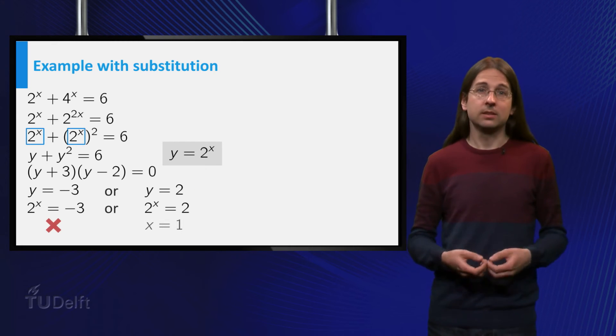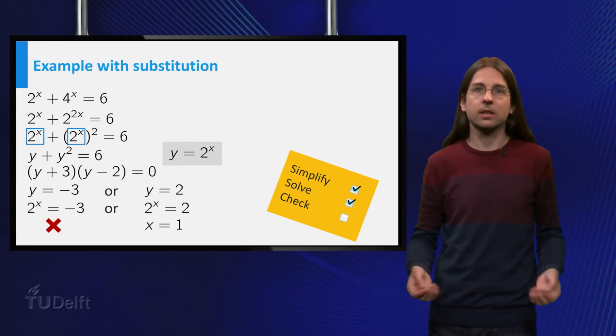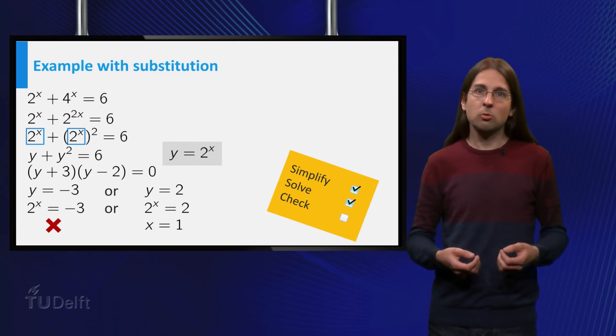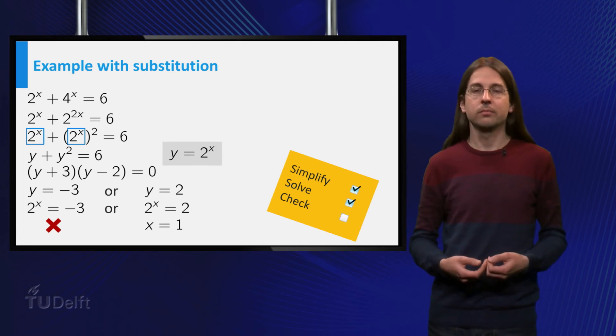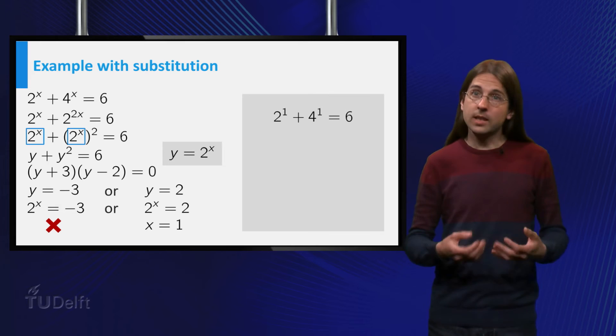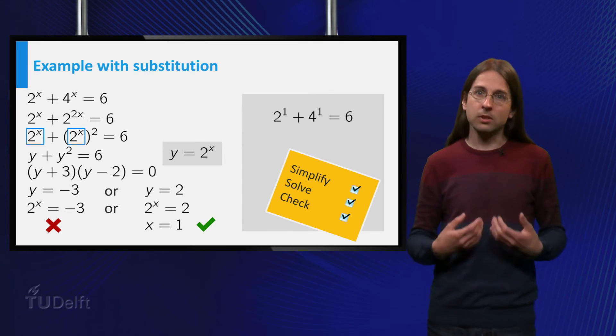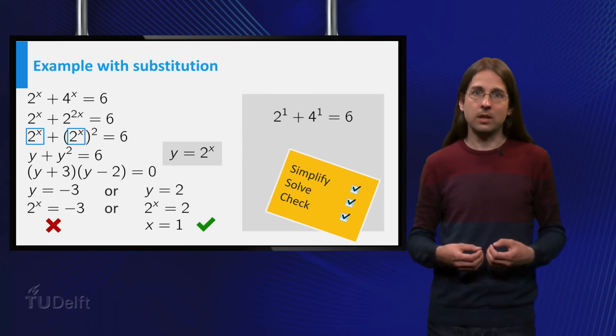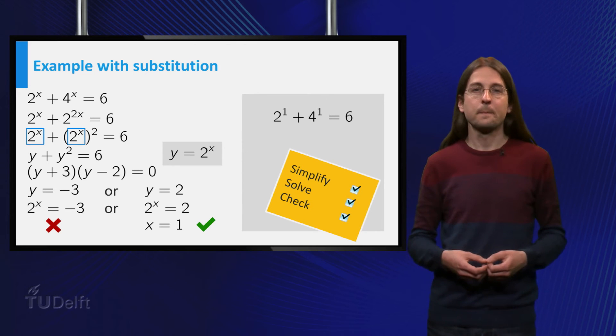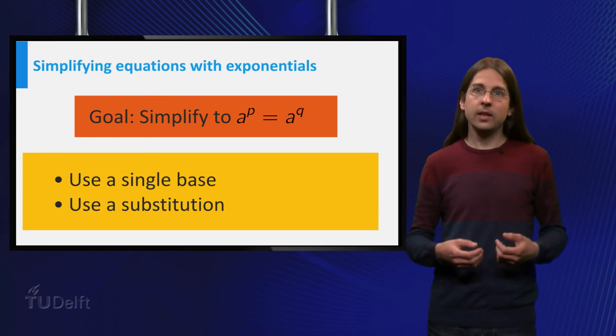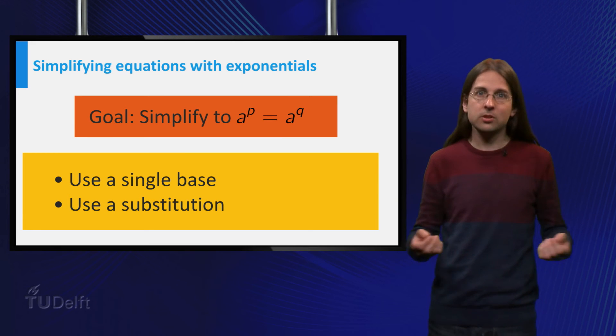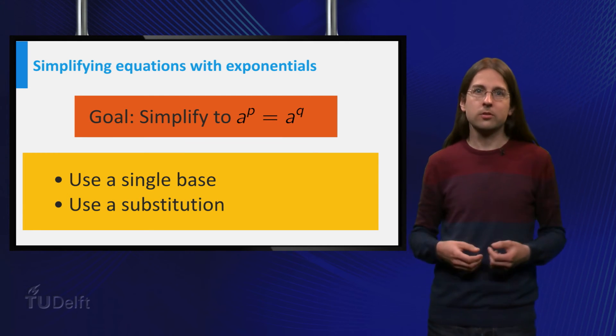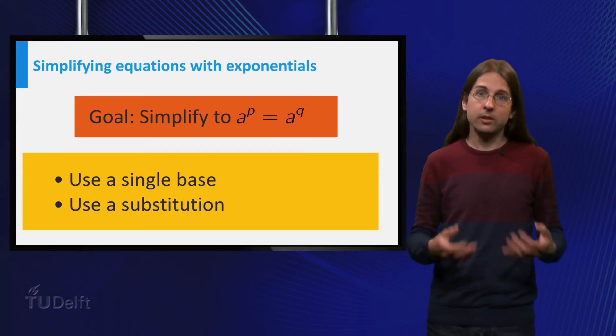The first equation has no solutions, as exponentials are never negative. The second equation has solution x = 1. Checking the solution x = 1 in the original equation shows that we have indeed found a solution. In dealing with exponentials in equations, you want to change all exponentials to the same base, possibly make a substitution, to reduce it to a basic equation of the form a^p = a^q.